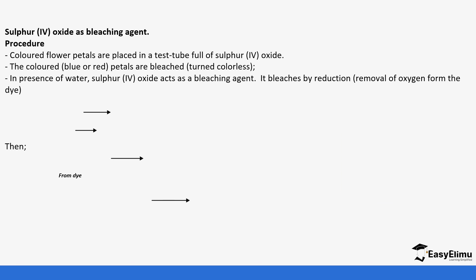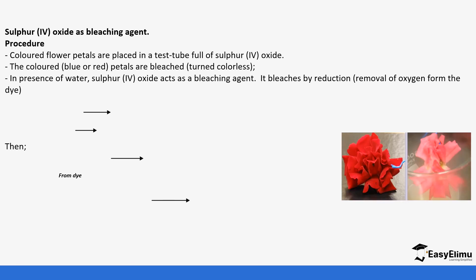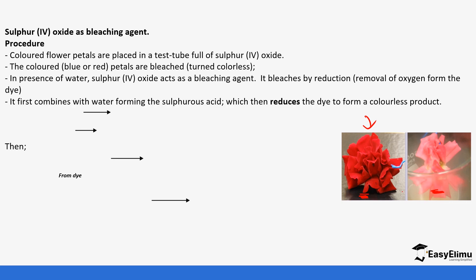Looking at the image shown, we start with flower petals that are bright red, and when placed in a gas jar containing sulfur dioxide they turn white. First, sulfur dioxide combines with water to form sulfurous acid (H₂SO₃). You can see from the equation that sulfur dioxide reacts with water to form sulfurous acid, and in the ionic equation it dissociates to form two hydrogen ions (H⁺) and sulfite ions (SO₃²⁻).